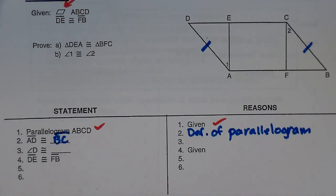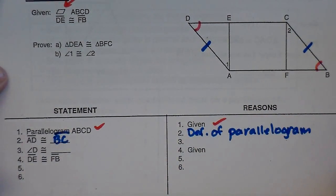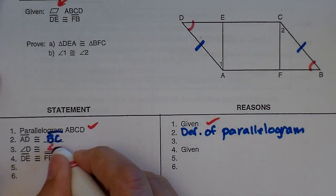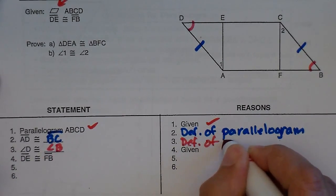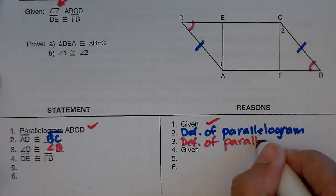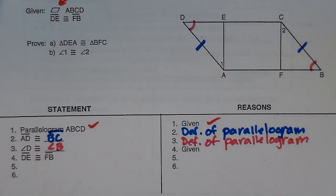And then the next thing I'm going to look at is angle D. Angle D must be congruent to angle B, and again, that's definition of a parallelogram. And it depends on your teacher or professor, you can say opposite angles in a parallelogram are congruent.